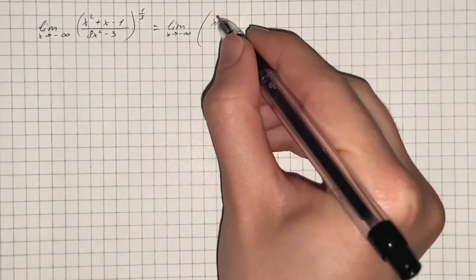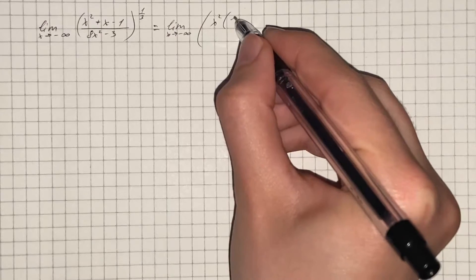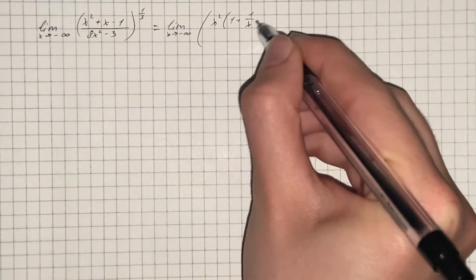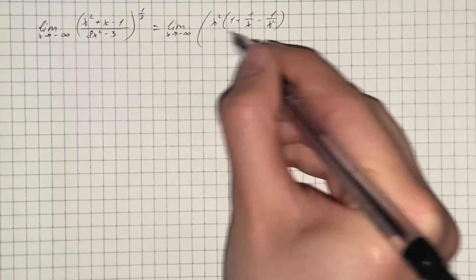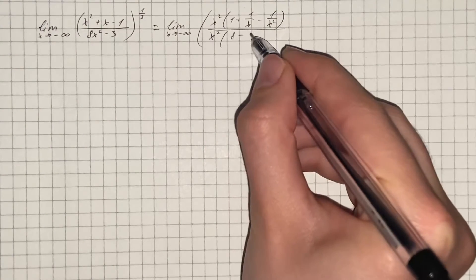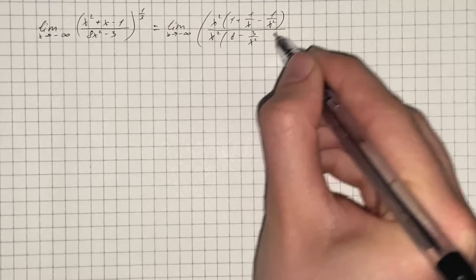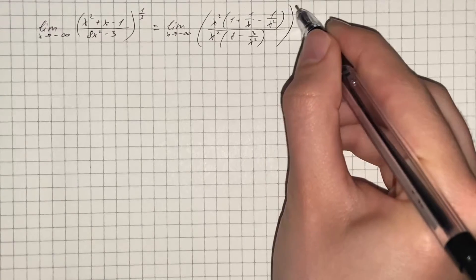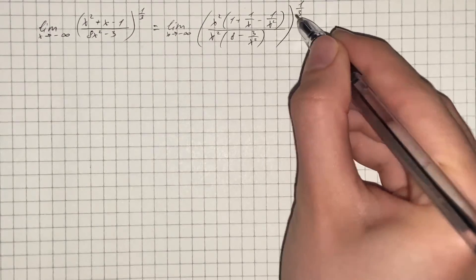So it's going to be x squared times (1 plus 1 over x minus 1 over x squared) over x squared times (8 minus 3 over x squared) to the power of 1/3.